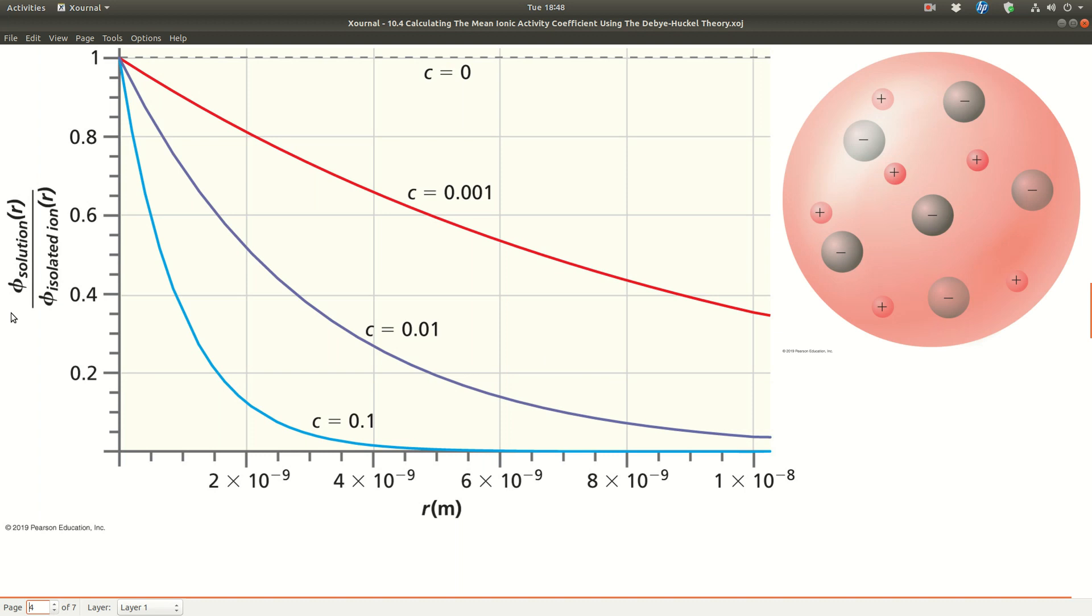This is showing the ratio of the electrostatic potential of the solution with the exponential term divided by the isolated ion potential without the exponential term. When the radius is zero, they're equal and it's one. The dashed line is where the concentration is zero, basically the isolated ion. We see that the electrostatic potential in the solution decreases as we increase the concentration and as we increase the radius.